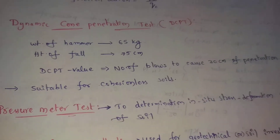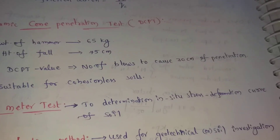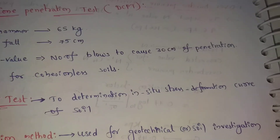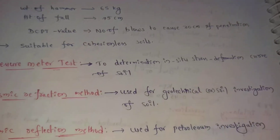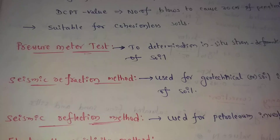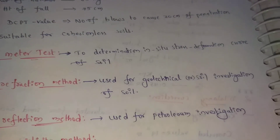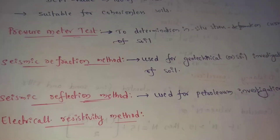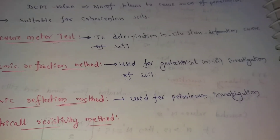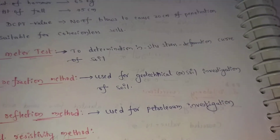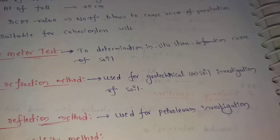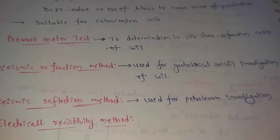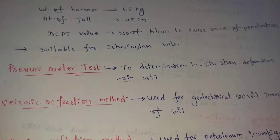The Pressuremeter Test is used to determine the stress-deformation curve or stress-strain curve of soil. The Seismic Refraction Method is used for geotechnical or soil investigation. The Seismic Reflection Method is used for petroleum investigation. The Electrical Resistive Method is used for oil exploration.